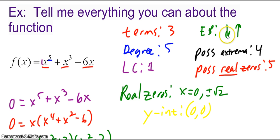Therefore, my end behavior is going to be down to the left and up to the right because the degree is odd and the leading coefficient is positive. Since the degree is 5, the possible number of extrema, or turns, is 4. The possible number of real zeros is 5.